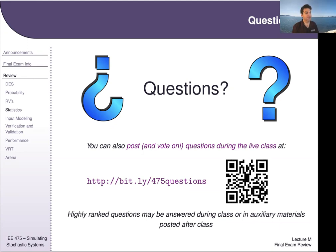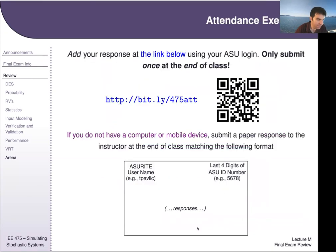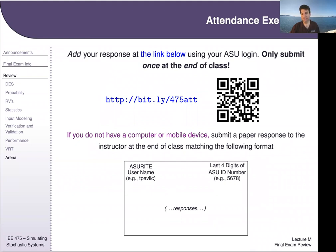Let's do another quick attendance exercise. The question is: what is the relationship between statistical power and Type 2 error? Put your answer in the attendance link in the chat.